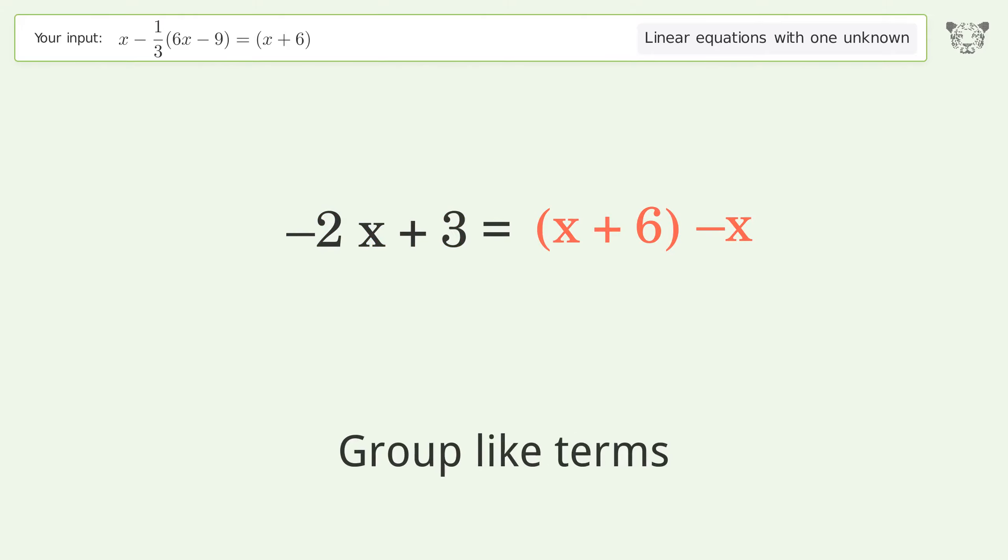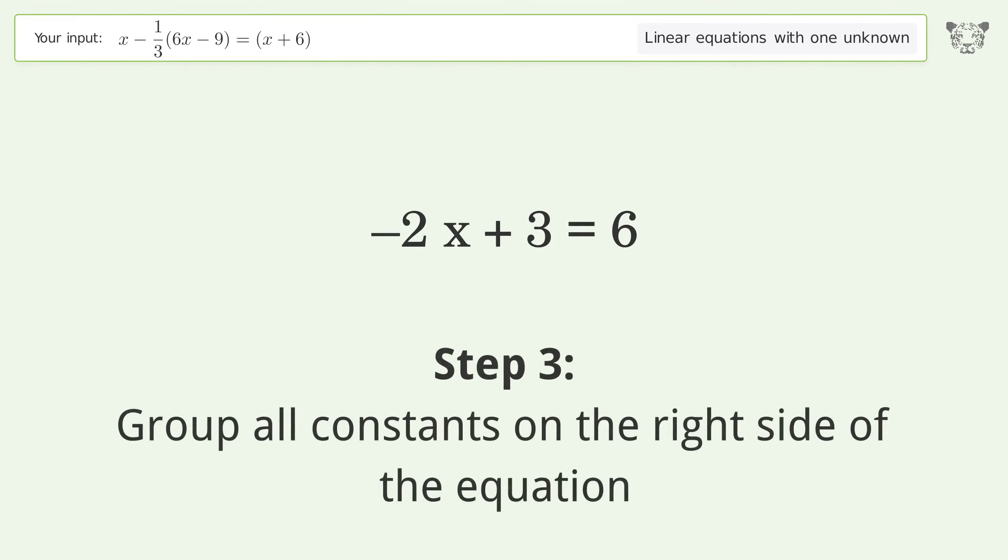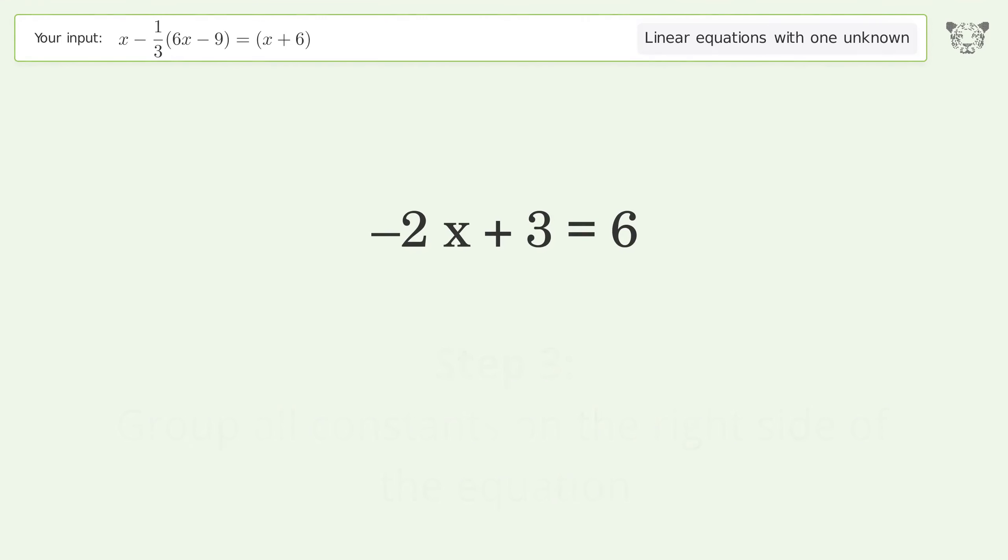Group like terms. Simplify the arithmetic. Group all constants on the right side of the equation. Subtract 3 from both sides. Simplify the arithmetic.